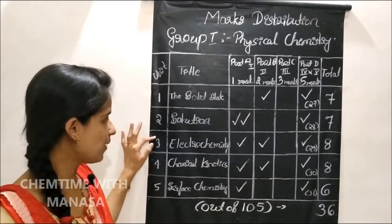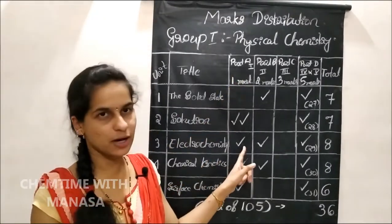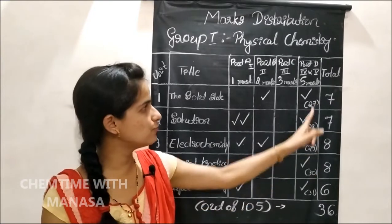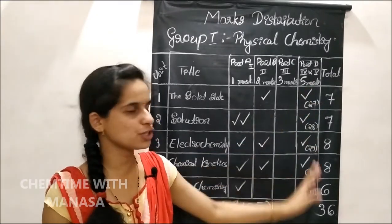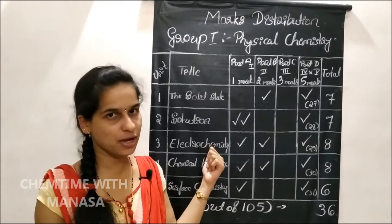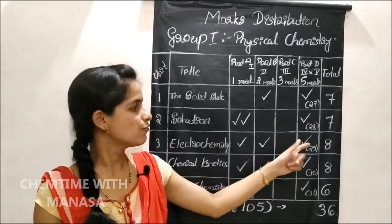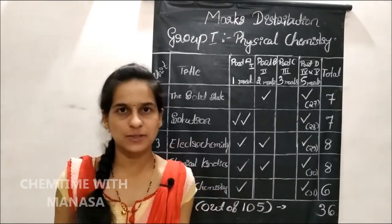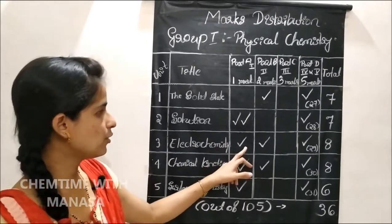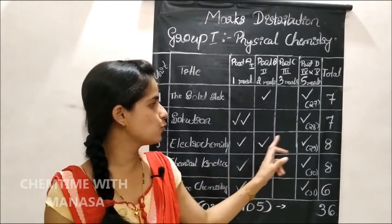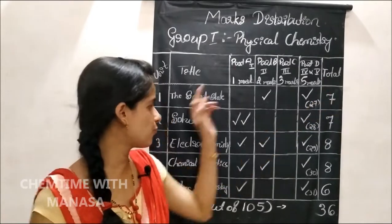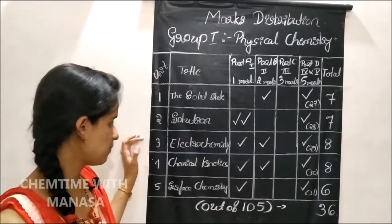Then, electrochemistry. From electrochemistry, 1 one-mark question, 1 two-mark question, and 1 five-mark question will be asked. The 29th question is from electrochemistry. From electrochemistry also you can expect a numerical problem. That is 1 plus 2 plus 5 — 8 marks will be from electrochemistry.